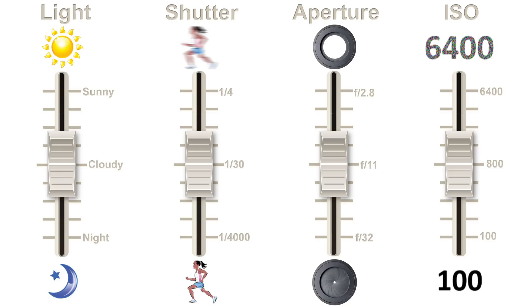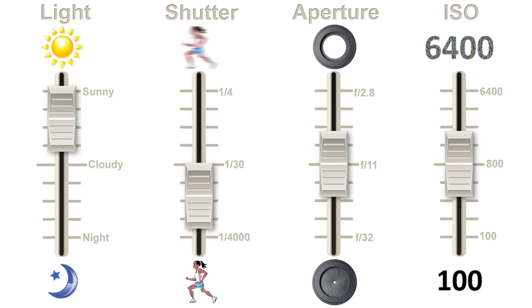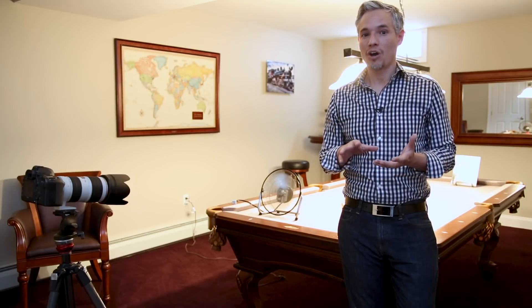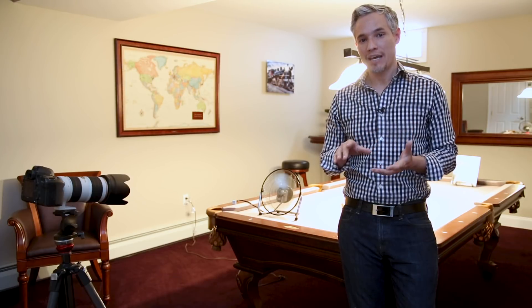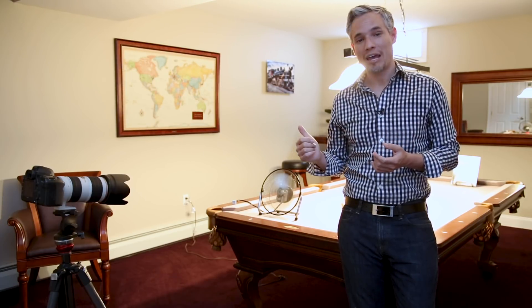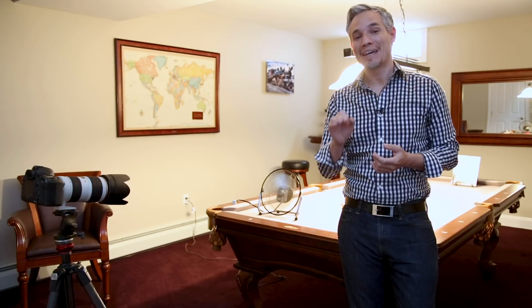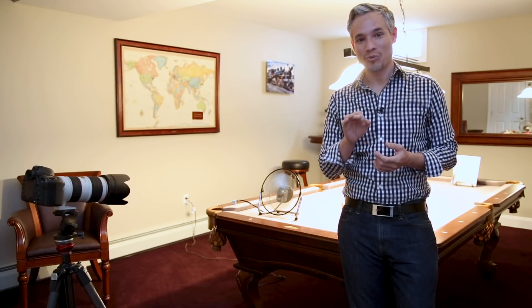They are all connected to each other, and adjusting any one of them can be compensated for by adjusting any other. In other words, if you make the room brighter by raising the lights, you'd have to make your shutter speed faster to compensate. It can be pretty complex and hard to explain in writing. That's why I'm going to walk you through a series of tests with my camera in this little lab setup I've made to show you exactly how everything works.